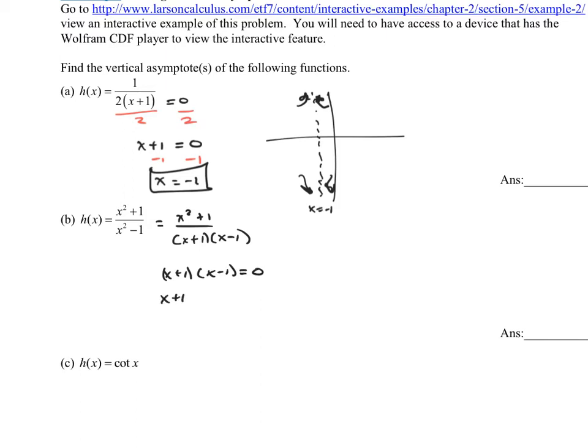This is going to set each factor equal to 0. So we set x plus 1 equals 0 and x minus 1 equals 0. Subtract 1 from both sides would give us x equals negative 1. Add 1 to both sides would give us x equals 1. These are two separate vertical asymptotes. They both need to be written down as x equals.